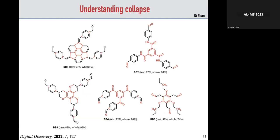Last year, Chi in my group revisited that dataset and looked at whether a graph neural network could give better performance. He did see some small gains. He also looked at explainability using an integrated gradient approach, where you can see different fragments' relative contributions to the prediction of collapse. The atoms coloured red are those contributing more to collapse. As we discussed on the panel, getting explainability from your models is not only desirable — it's also more satisfying as a scientist.